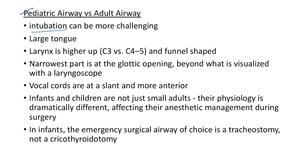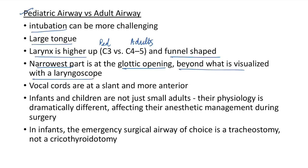Now let us see about the differences between pediatric airway and adult airway. Intubation is more challenging in pediatric cases because children have a large tongue relative to their oral cavity. The larynx is higher — at the level of C3 in children versus C4 to C5 in adults. The larynx is funnel-shaped in children and the narrowest part is at the glottic opening, which is beyond what is visualized with a laryngoscope. The vocal cords are slanted and more anterior. It is important to remember that infants and children are not just small adults — their physiology is dramatically different.